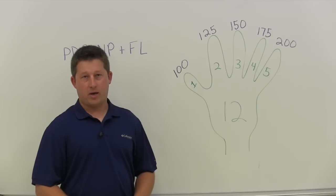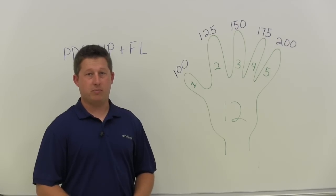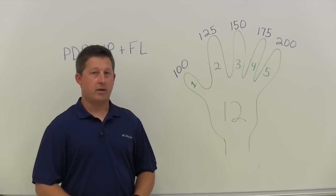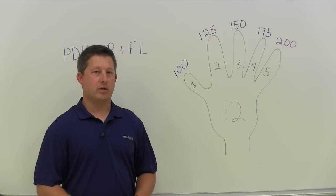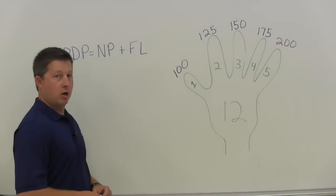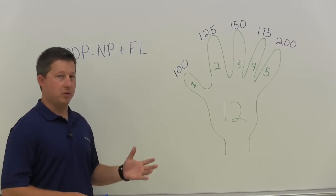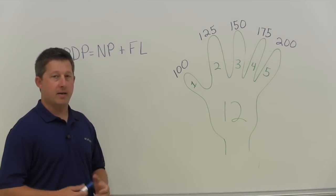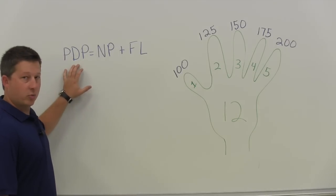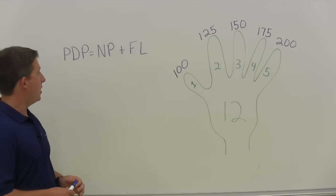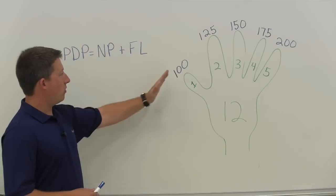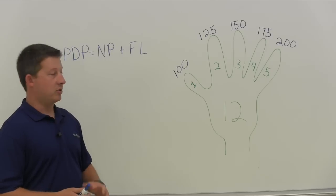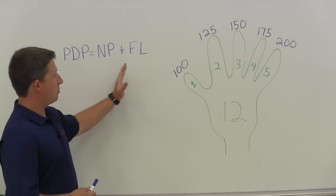You will use the friction loss combined with the nozzle pressure to determine what your pump discharge pressure should be. When using the hand method, you are calculating the friction loss per 100 feet of hose. Let's review how to calculate the pump discharge pressure, or PDP. We need to understand that PDP is what you're trying to get as a driver operator — it's the nozzle pressure and the friction loss added together. For now, we're just going to focus on nozzle pressure and friction loss.